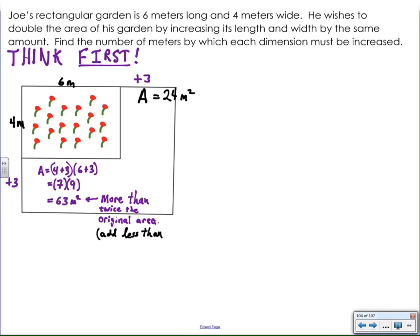Just to be clear, four plus three gives me the new width and six plus three gives me the new length. That's why I get seven times nine or 63 square meters. As I suspected, 63 square meters is more than double the original area. So I don't have the answer to the question, but I do know that the amount I should extend each dimension is going to be less than three.